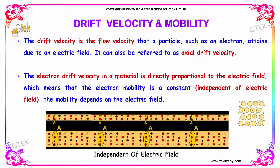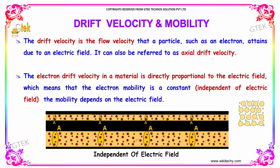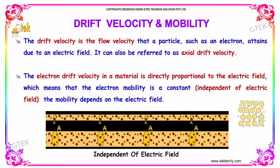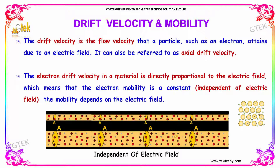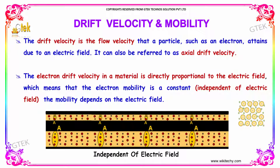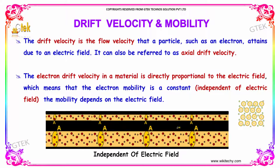The electron drift velocity in a material is directly proportional to the electric field, which means that the electron mobility is a constant, independent of the electric field. The mobility depends on the electric field itself.